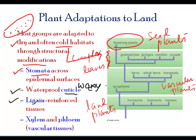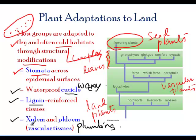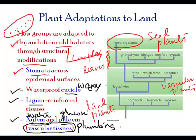Some plants also have lignin, which is a molecule that gives strength to plants. For example, the bark of trees is full of lignin. Lastly, plants have a very interesting plumbing system of two kinds: xylem and phloem. Xylem vessels usually allow the flow of water, and phloem carries everything else — for example, glucose and other nutrients. Because of these, plants are called vascular plants, as they have a vascular array for the passage of different substances and nutrients.